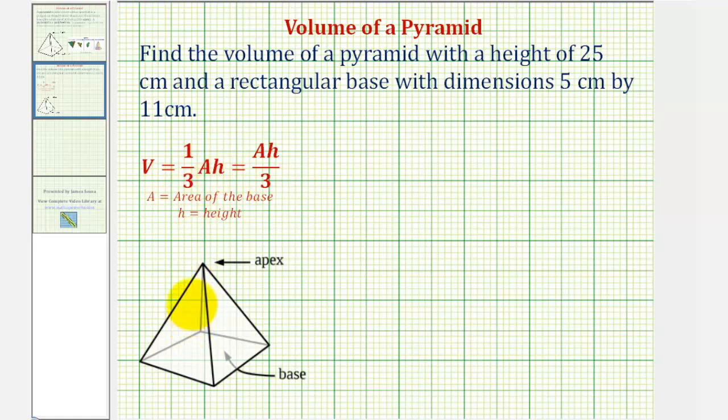Let's go ahead and label the dimensions given on this pyramid here. Again, the height is 25 centimeters, so this length here would be 25 centimeters, and the base has dimensions 5 centimeters by 11 centimeters. Let's go ahead and label this 5 centimeters and label this 11 centimeters.